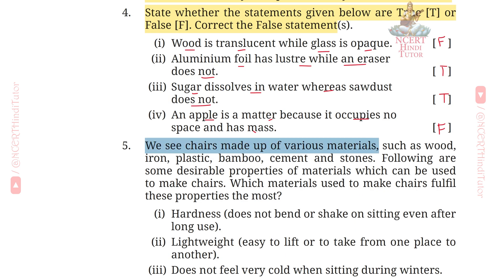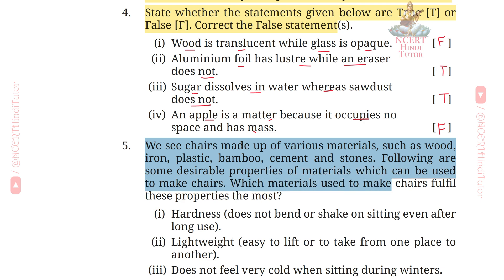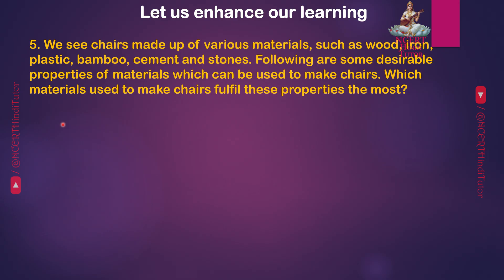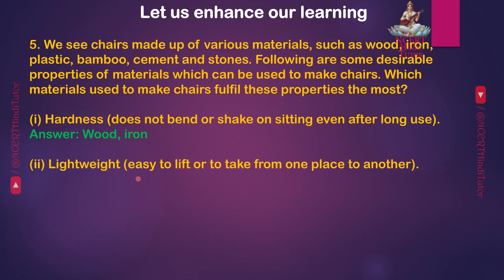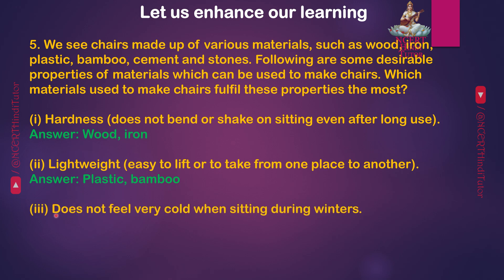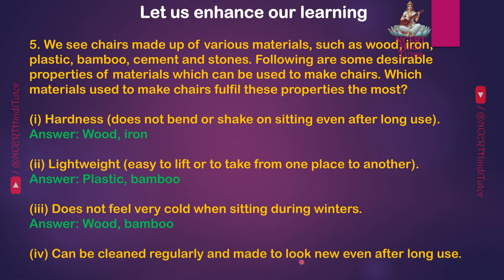Q5: We see chairs made up of various materials such as wood, iron, plastic, bamboo, cement and stones. Following are some desirable properties of materials which can be used to make chairs. Which materials fulfill these properties the most? 1. Hardness (does not bend or shape on sitting even after long use). 2. Lightweight, easy to lift or take from one place to another — Plastic, bamboo. 3. Does not feel very cold when sitting during winters — Bamboo. 4. Can be cleaned regularly and made to look new even after long use — Plastic, iron.